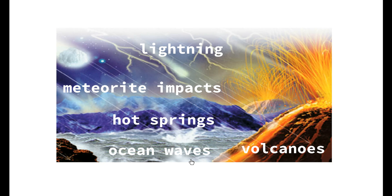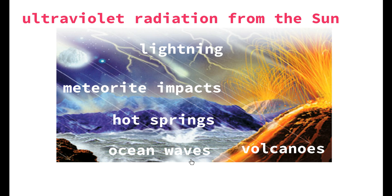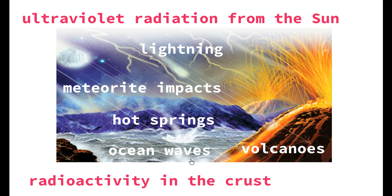Other forms of energy not physically visible in this image include ultraviolet radiation from the sun, which has been beating down and heating the surface of the Earth since its creation. There is also radioactivity in the crust of the Earth — a result of the nuclear reactions that took place during the formation of the solar system, with residual radioactivity still remaining in the crust.